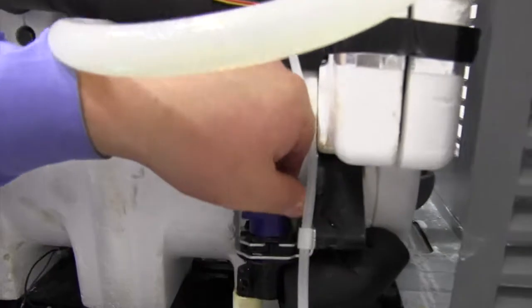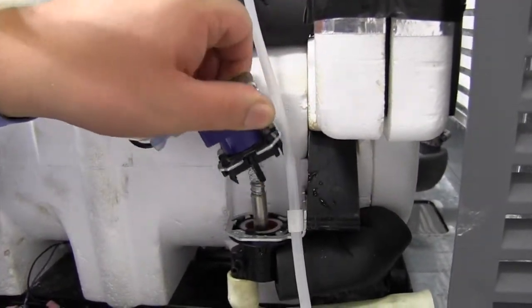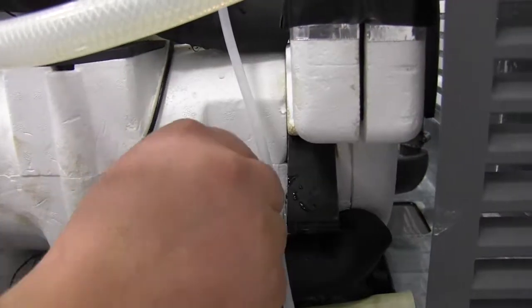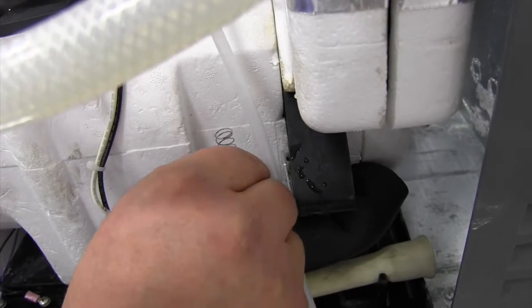So all you have to do is turn this a quarter turn and pull the coil off the top. Inside here is your plunger and a little neoprene o-ring.